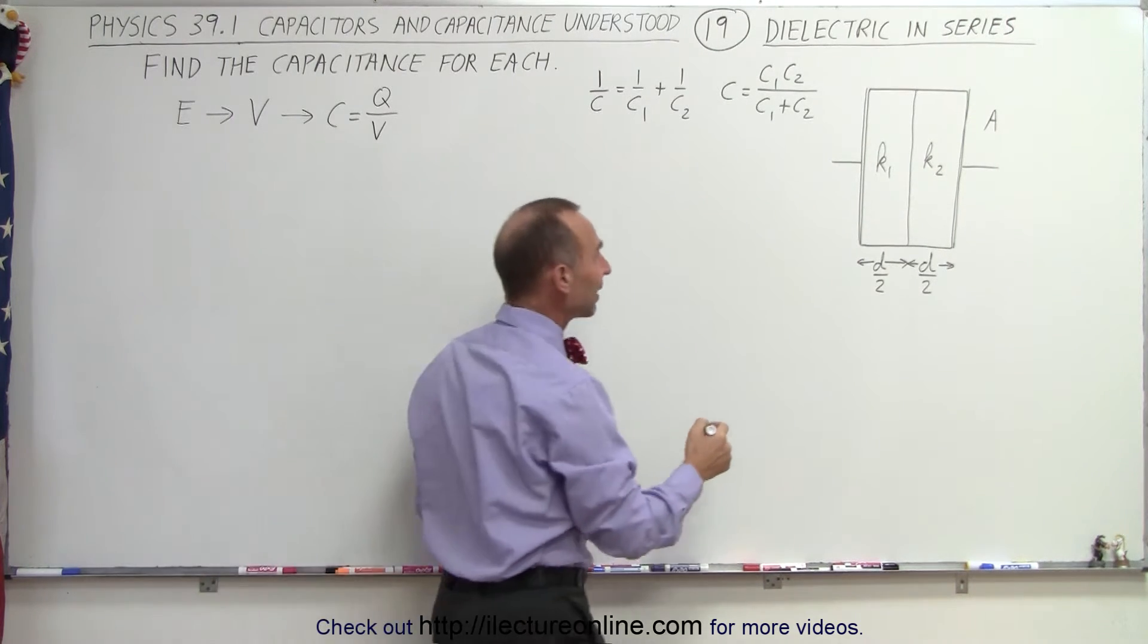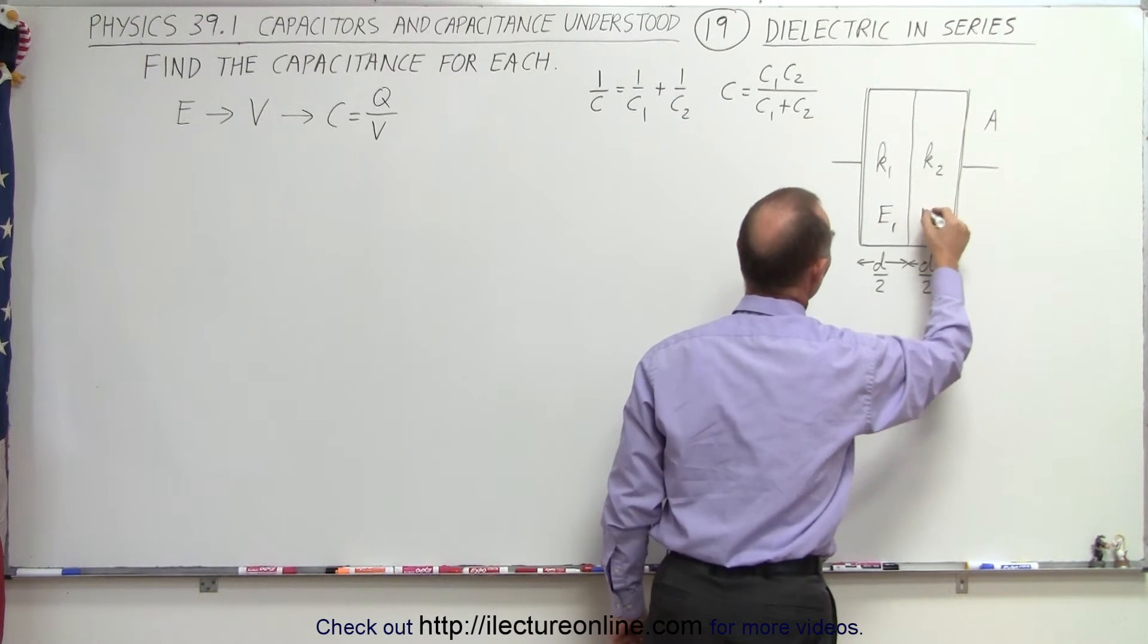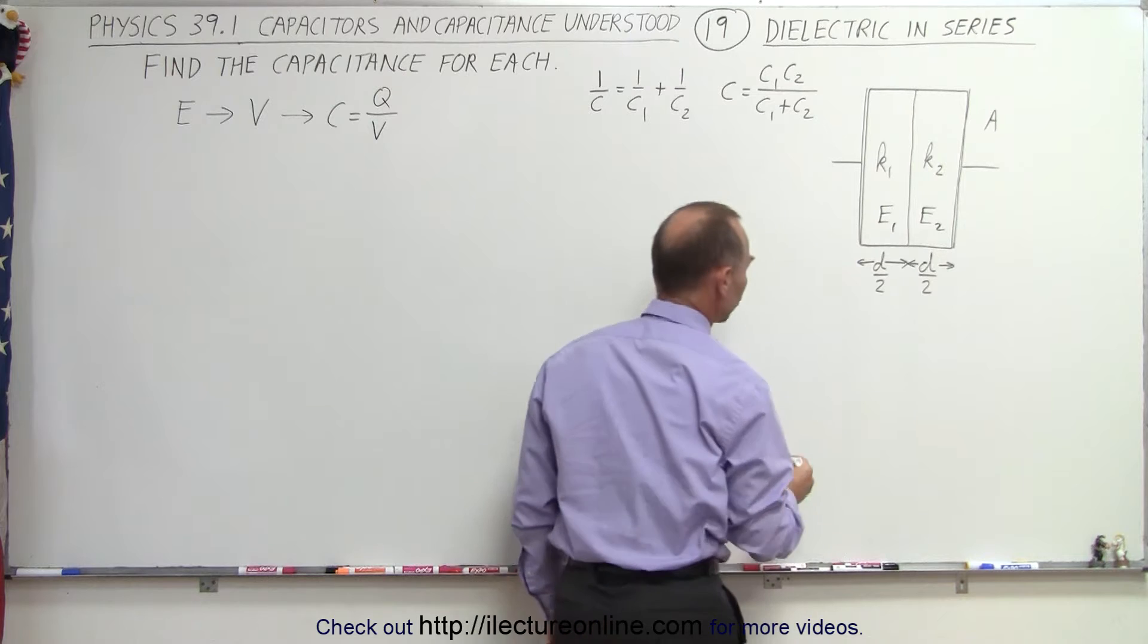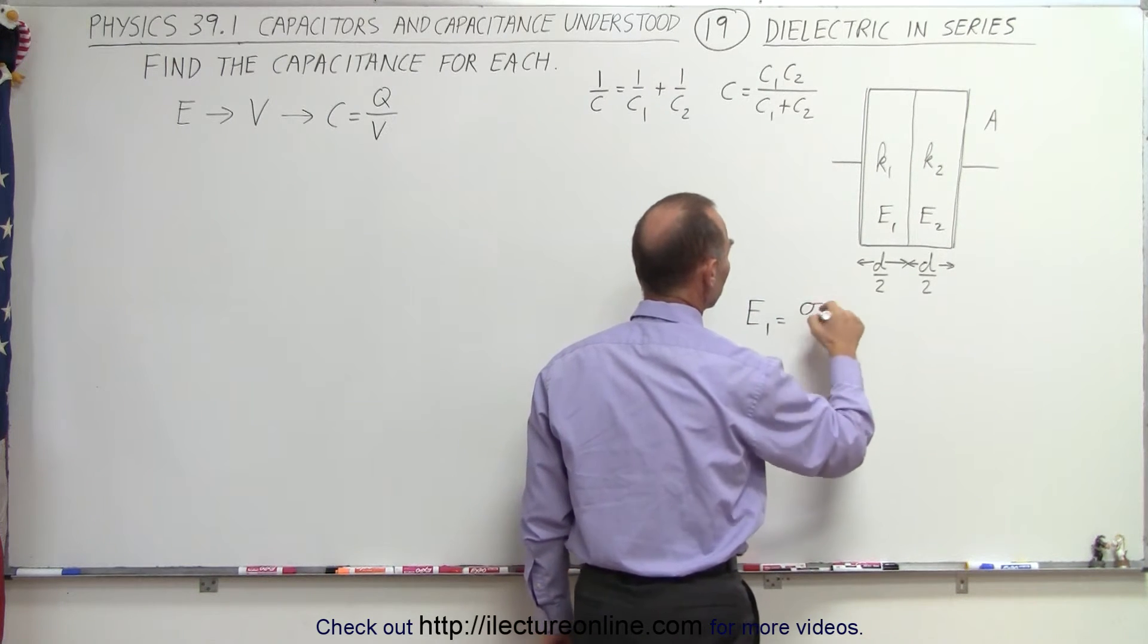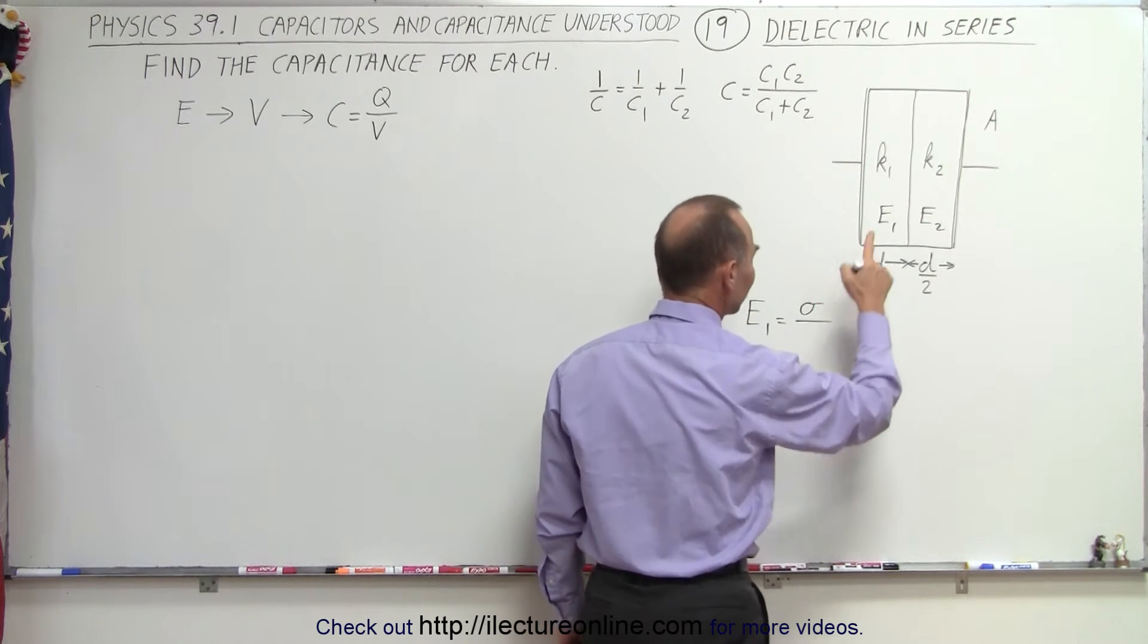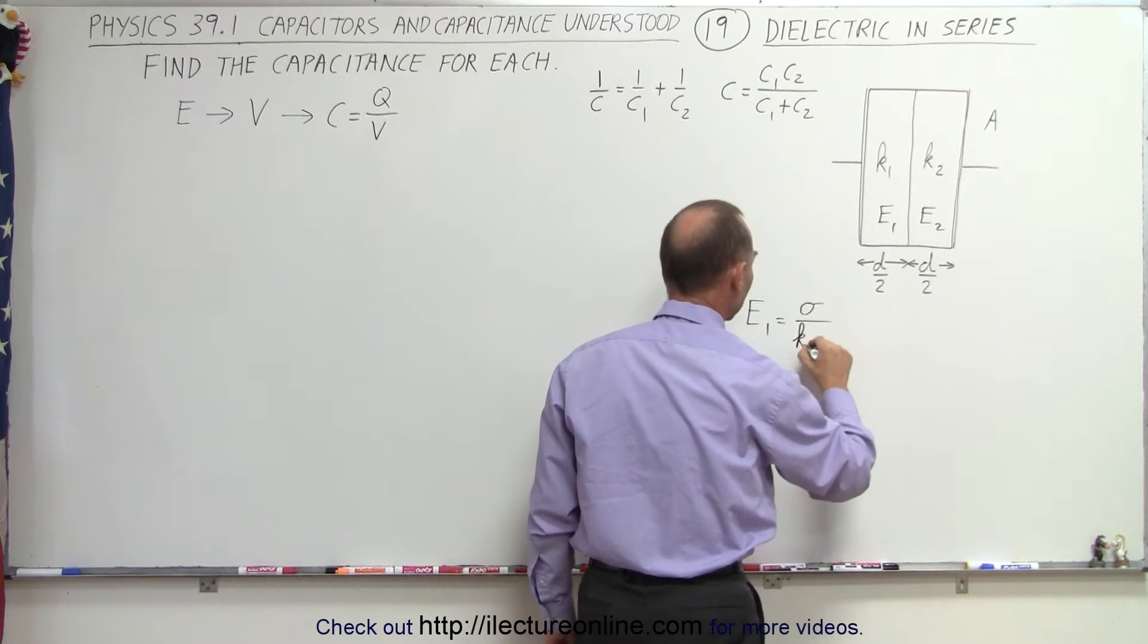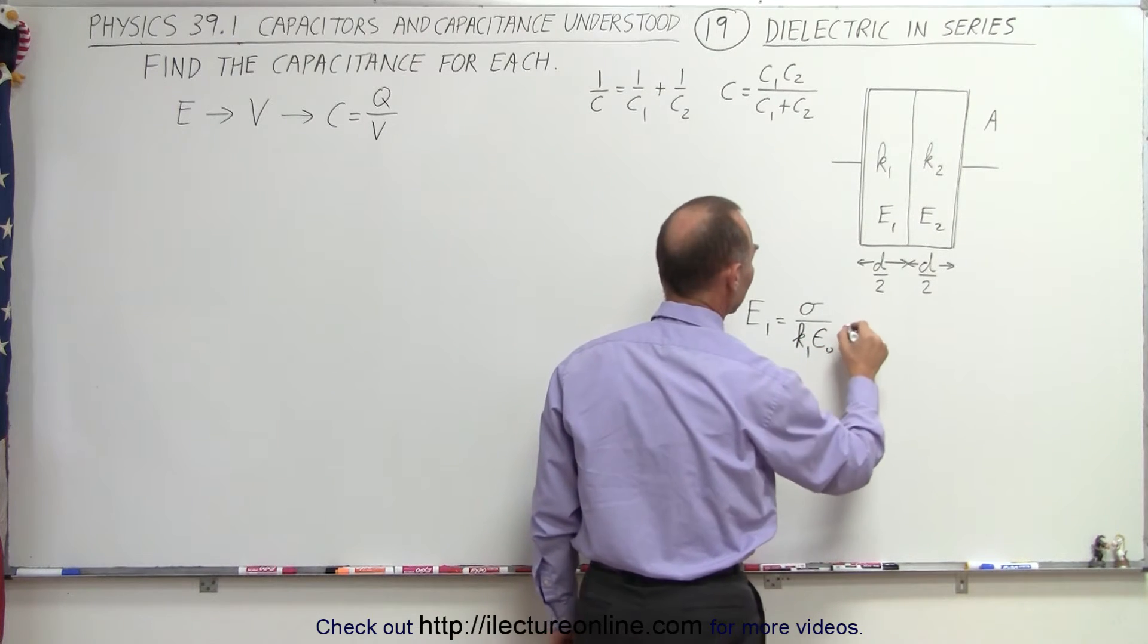So first, we're going to find the electric field in each of these two places, the electric field in one and the electric field in portion two. And we know the definition of the electric field is equal to the charge density divided by epsilon naught, except if there's a dielectric in there, we also have to take into account the dielectric constant.